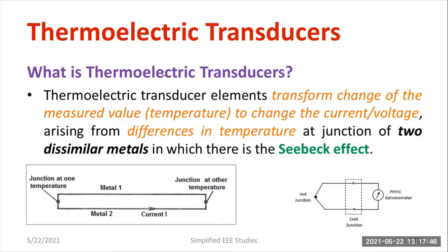So what do you mean by thermoelectric transducers? Thermoelectric transducer elements transform changes of the measured value — that means temperature — to a change in either current or voltage arising from a difference in temperature at the junction of two dissimilar metals, in which there is a Seebeck effect. Thermoelectric transducers operate on the principle of the Seebeck effect, for which we require two dissimilar metals.